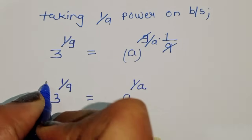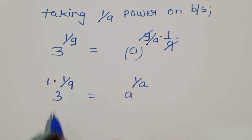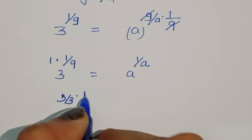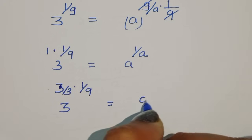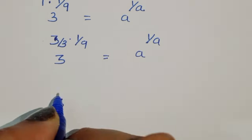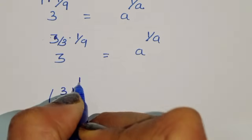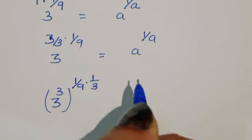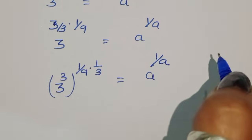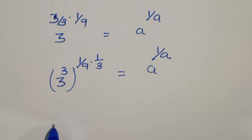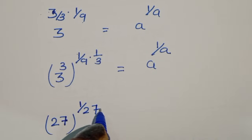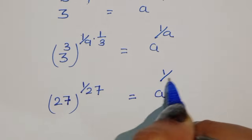Now 3 power 1 upon 9 — we can write this as 3 power (3 upon 3 times 1 upon 9), which equals 3 power (3 times 1 upon 9 times 1 upon 3). Since 3 power 3 is 27, we can write this as 27 power 1 upon 27, equal to a power 1 upon a.